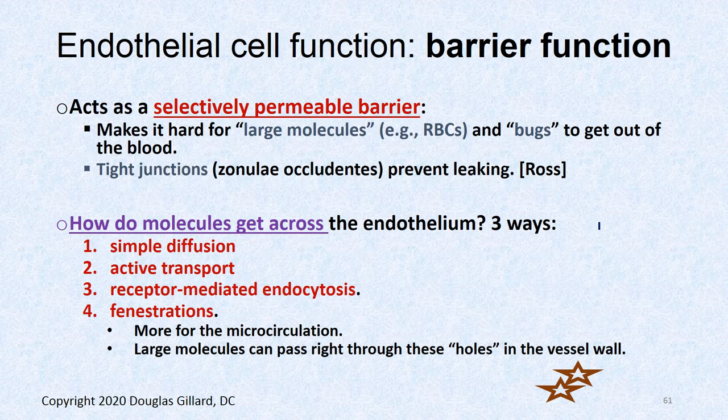Endothelial cells also have a barrier function — they make it so red blood cells can't get out and bugs have a harder time getting into blood vessels and invading tissue. They have tight junctions between them. Molecules can cross via simple diffusion in capillaries, active transport, receptor-mediated endocytosis, or through fenestrations in fenestrated capillaries.